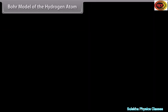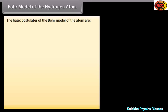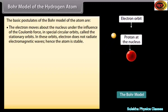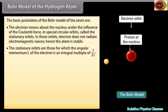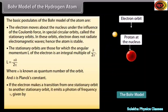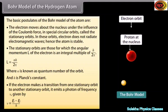Bohr's model of the hydrogen atom: The basic postulates are: the electron moves about the nucleus under the Coulomb force in special circular orbits called stationary orbits, in which the electron does not radiate electromagnetic waves and the atom is stable. The stationary orbits are those for which the angular momentum L = NH/2π, where N is the quantum number and H is Planck's constant. If the electron makes a transition from one stationary orbit to another, it emits a photon of frequency ν = (Ei − Ef)/H.